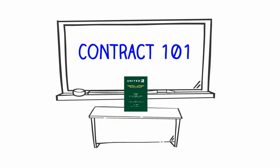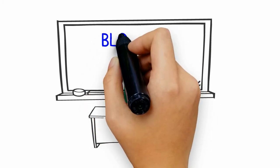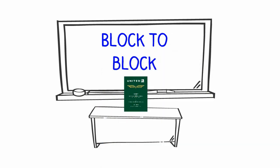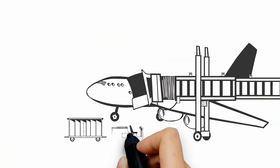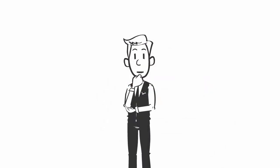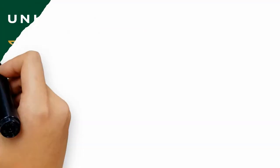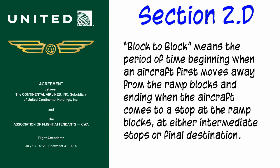Welcome to Contract 101. Today's topic: block to block. What does that mean and how do I figure it out? Block out is when the aircraft door is closed and the brakes have been released. Block in is when the aircraft is parked, brakes set, and the ramp blocks are in place.